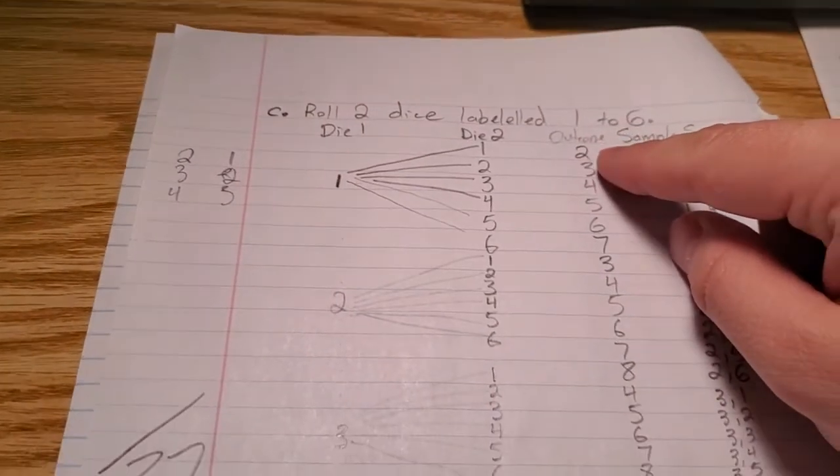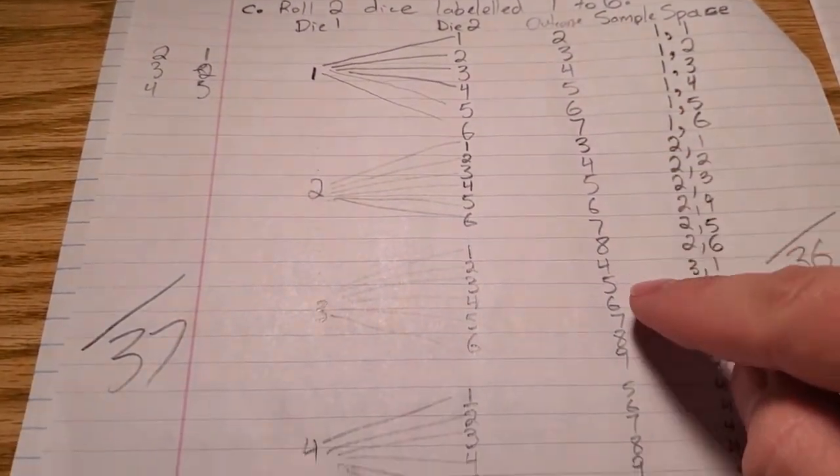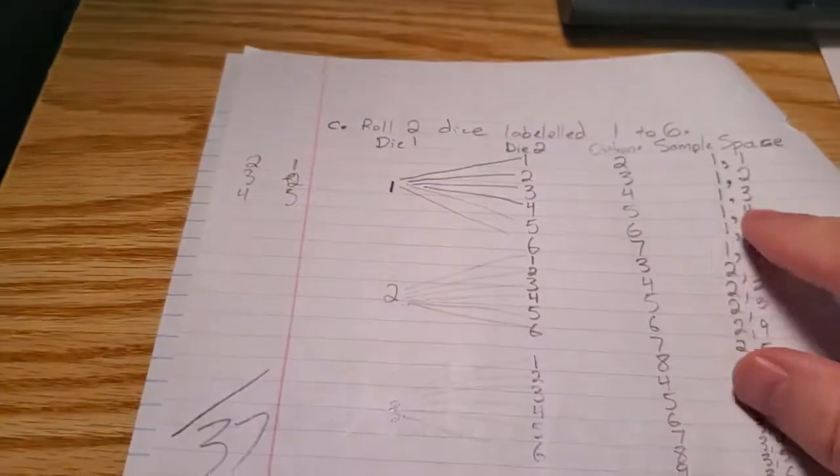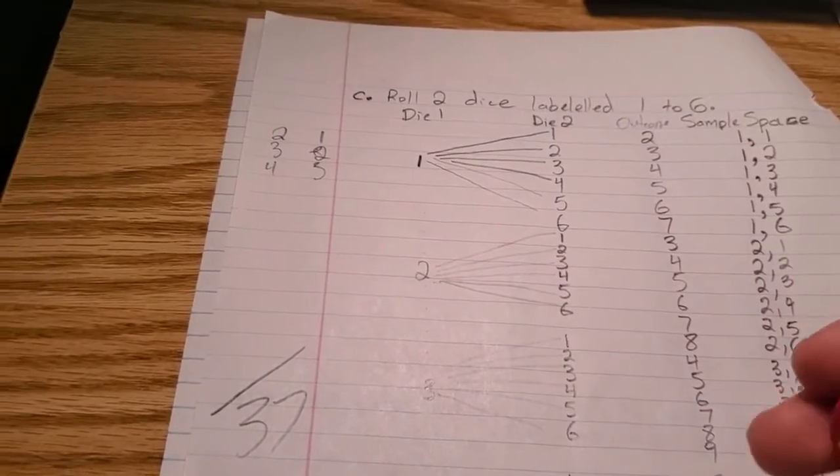So if we count through, we look through all these options, how many twos are there? There's one right at the top, and there's no more twos that are possible. So for twos, there was only one option. What about threes? When one die is one and the other one is two, that's one option, or the opposite. So there was two options for three.